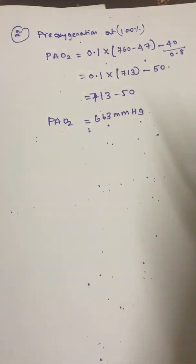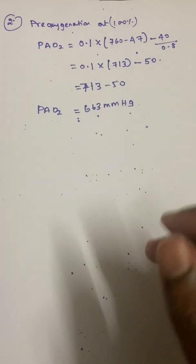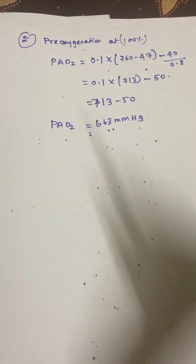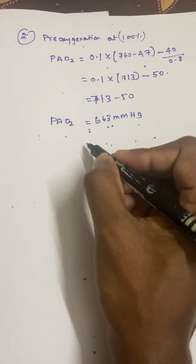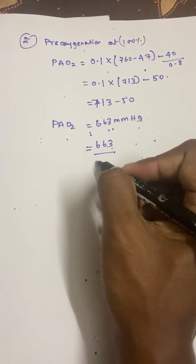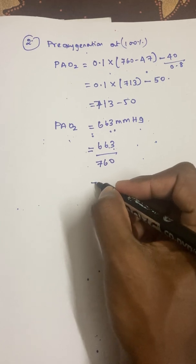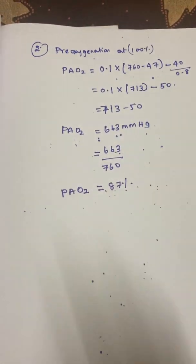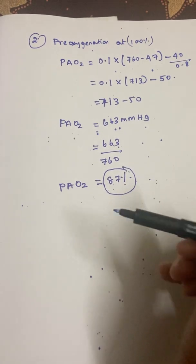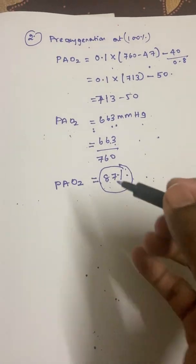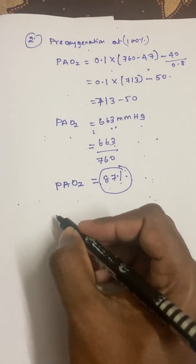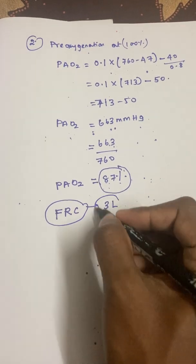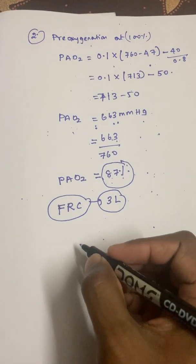On room air the alveolar O2 was 100 mmHg, but with 100% O2 pre-oxygenation, PAO2 is 663 mmHg. As a percentage of atmospheric pressure: 663/760 ≈ 87%. So 87% of the alveolar gas is now oxygen after adequate pre-oxygenation, compared to only 13% on room air.